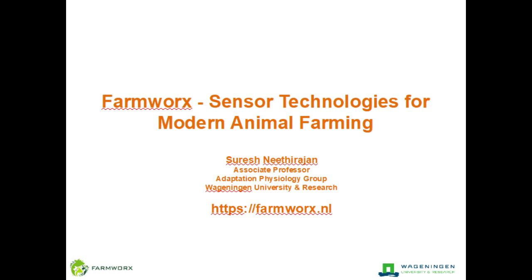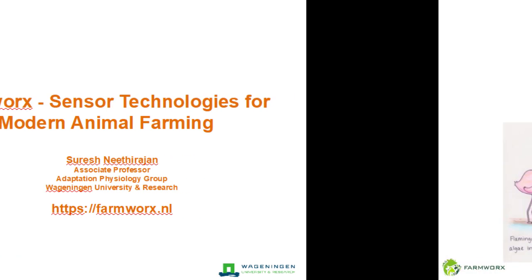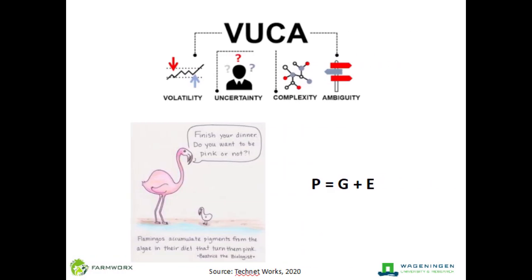So where are we right now? How is society moving in the midst of this transition from the pandemic last year to 2021? What we have gone through and will be going through I would probably classify as a VUCA world.